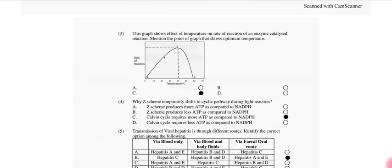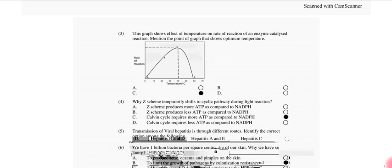Moving to the next MCQ. The graph shows effect of temperature on rate of reaction of enzyme catalyzed reaction. Mention the point of graph that shows optimum temperature. So that is point C. After that, Y-Z scheme temporarily shifts to cyclic pathway during light reaction. Calvin cycle requires more ATPs compared to NADPH.